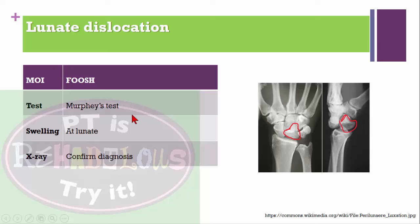Lunate dislocation: the most common wrist dislocation. Mechanism is fall on outstretched hand. Special test is Murphy's test. Swelling at the lunate. Confirmed by X-ray.